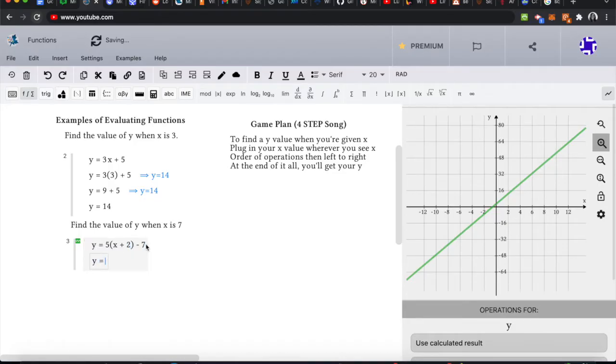Y equals 5, 7 plus 2, minus 7. This gives us the answer right here, but we're going to ignore that because it's more important to know the process as much as the actual answer. So we're going to go next.